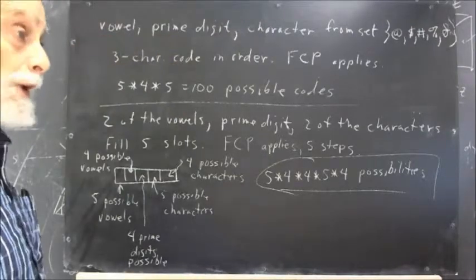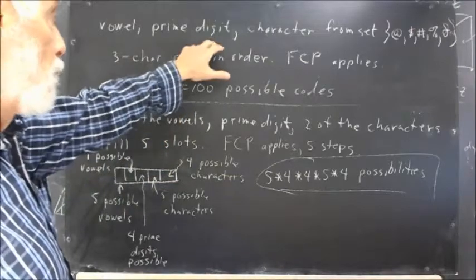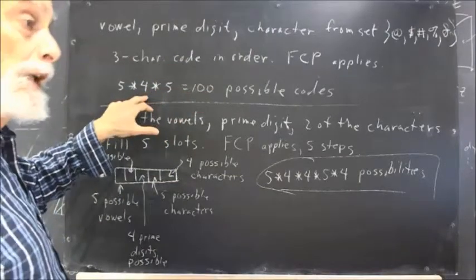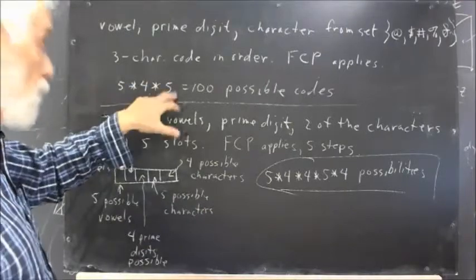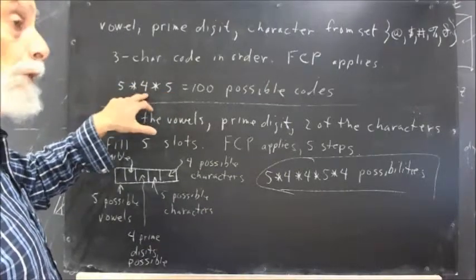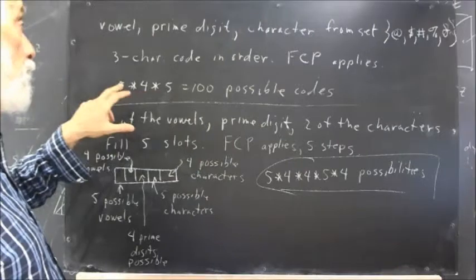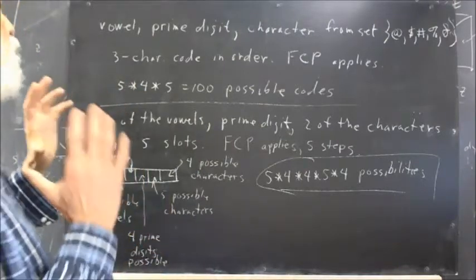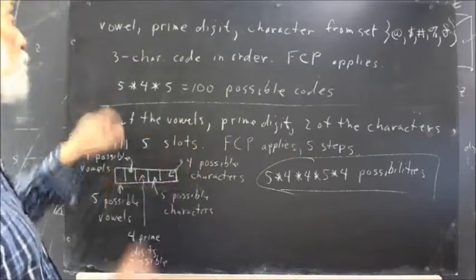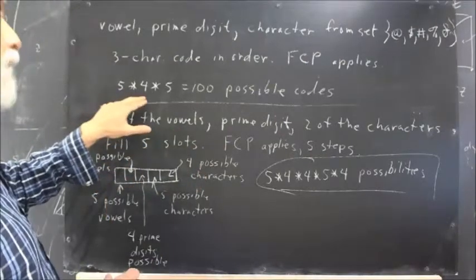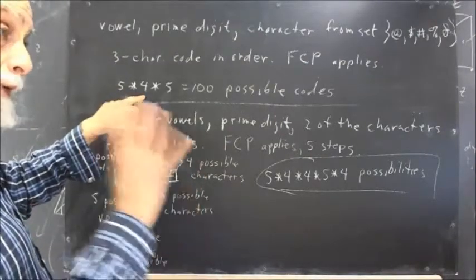Then a prime digit is chosen. There are four prime digits, so there are four possible choices. It doesn't depend on what was chosen earlier or what's going to be chosen later. There are four prime digits, so the number of ways to choose a prime digit is always going to be four.